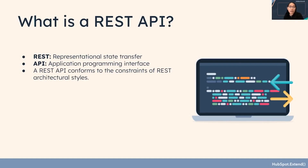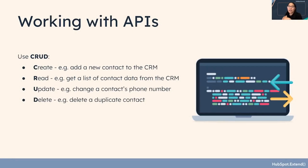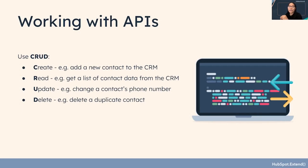When working with APIs, there is a useful acronym: CRUD, which stands for Create, Read, Update, and Delete. Create could be adding a new contact to the CRM. Read could be getting a list of contact data from the CRM. Update could be changing a contact's phone number. And Delete could be deleting a duplicate contact. These are the four main pillars we work within when using our APIs.